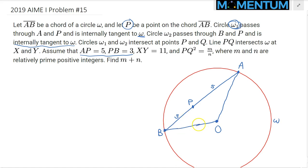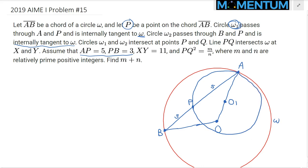But where exactly? It will be on the perpendicular bisector of AP and BP respectively. So the perpendicular bisector of AP gives us point O1. We can now draw a rough sketch — eyeballing, something like this. This is a circle which is internally tangent to omega at point A. Similarly, I can draw another circle internally tangent at point B.